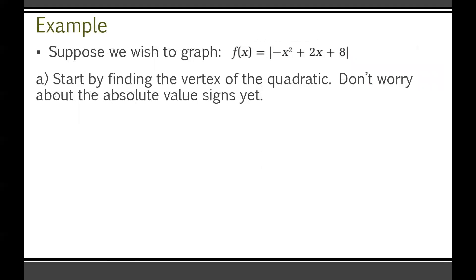Here's an example: graph the absolute value of negative x² plus 2x plus 8. Step A: start by finding the vertex of the quadratic — ignore the absolute value signs for now. The vertex x-coordinate is x equals negative b over 2a, which is negative 2 over 2 times negative 1, giving negative 2 over negative 2, which is positive 1.